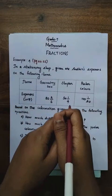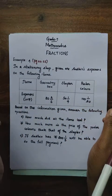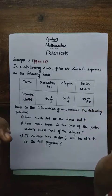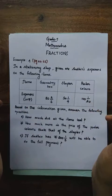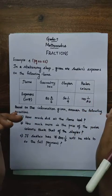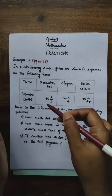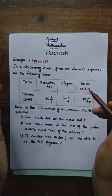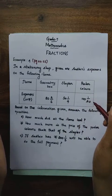Our question is: in a stationery shop, expenses on the following items are given. So there is someone going to a stationery shop and buying some stationery items. The items and their costs are given: the geometry box costs 82 and 2/5, the stabler costs 51 and 1/4, and poster colors cost 101 and 1/20.